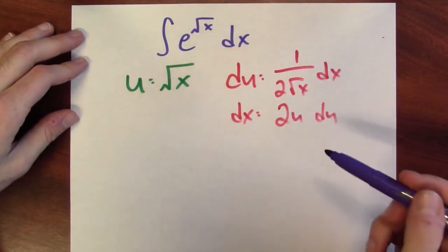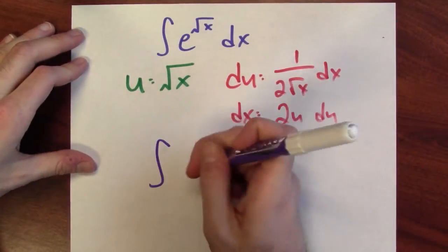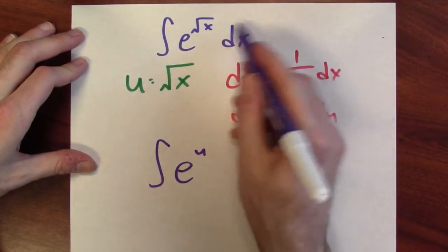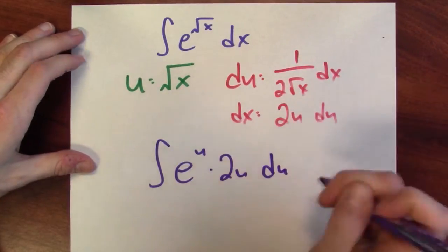What does that end up doing to the integral? Well, this integral then becomes the integral of e to the u, and instead of dx, it's now 2u du.